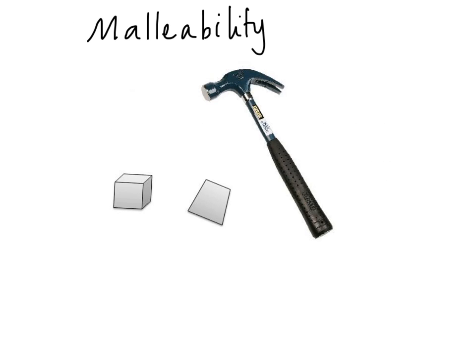Before we go further, let's understand the important property of malleability of metals. Some alloys of iron are more malleable, so we need to understand what this means. If you hit a metal block hard with a hammer and can make it into a thin sheet or plate, that metal is malleable. In the steel industry, they take blocks or thick sheets of steel and roll them through heavy rollers to press them into sheets of different thicknesses — that is malleability.